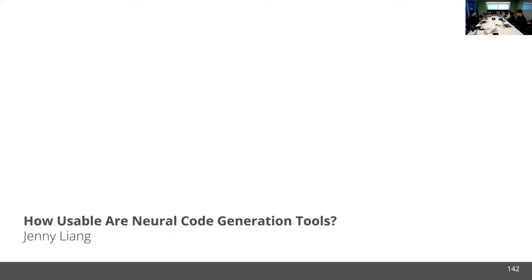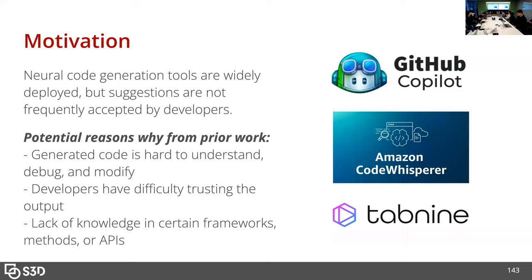Hi everyone, hopefully the mic is working. My name is Jenny and I'll be talking about a project investigating how usable neural code generation tools are. As of the past couple of years, we've seen a shift towards using neural code generation tools in practice by software developers. Recent research shows that a lot of suggestions from these tools aren't actually accepted by developers — one paper found that only about 30% of suggestions in total were actually accepted by co-pilot users. Some user studies have identified challenges: generated code might be hard to understand, debug, and modify to fit use cases, and developers have difficulty trusting that the code actually does what they want.